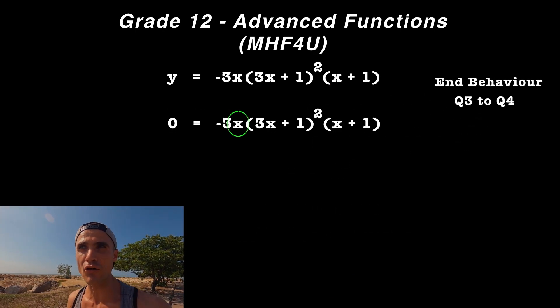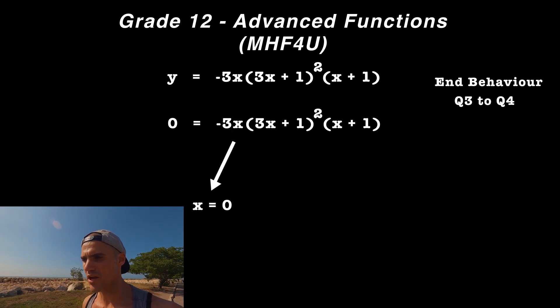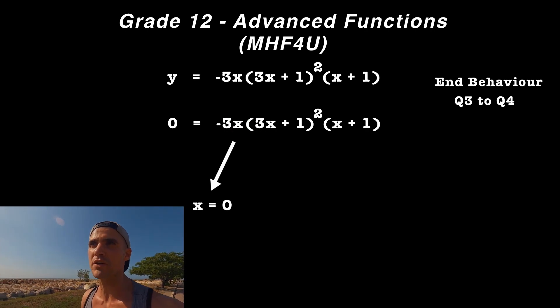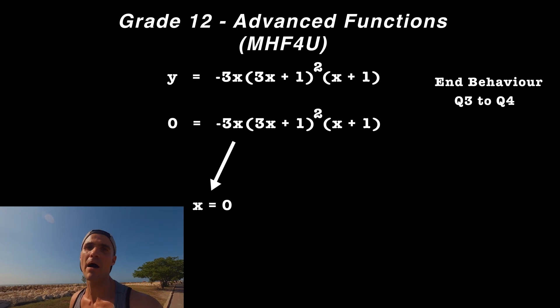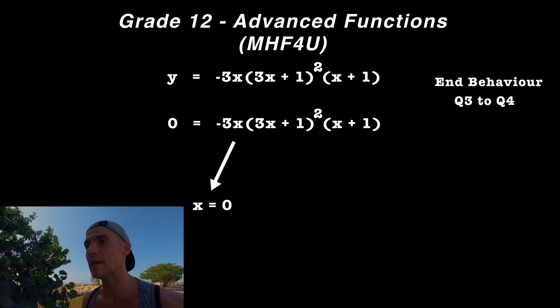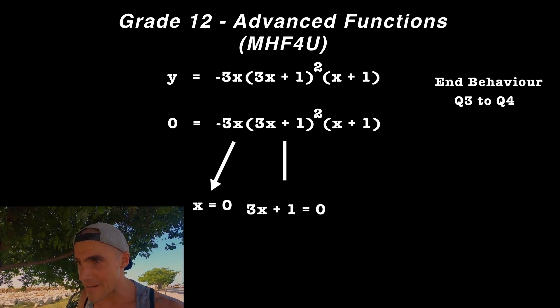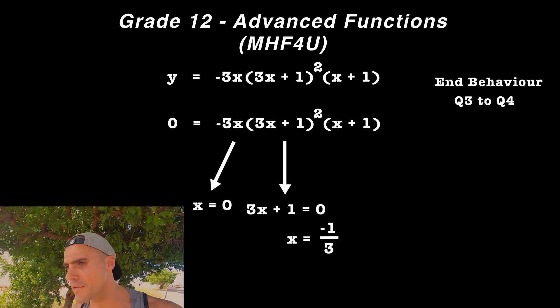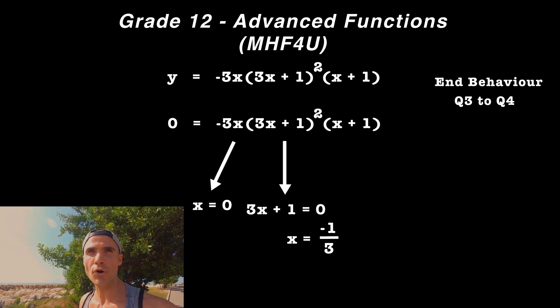The x by itself is an x-intercept of 0. You could picture it as a factor of x-0. So one x-intercept is 0. The next factor gives an x-intercept of -1/3. It has an order of 2. Remember, when an x-intercept has an even order, graphically the graph will bounce off that x-intercept.